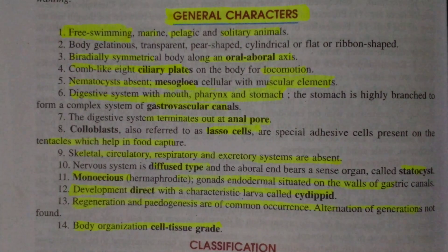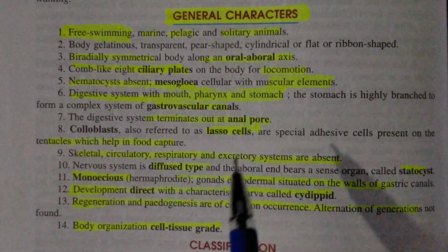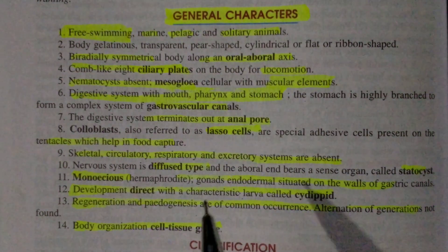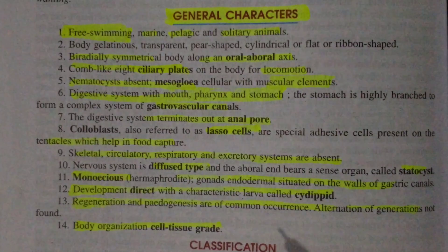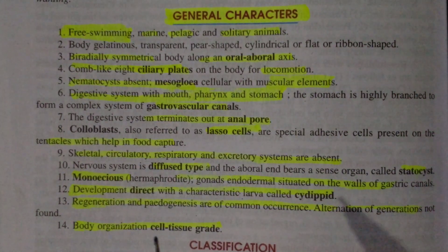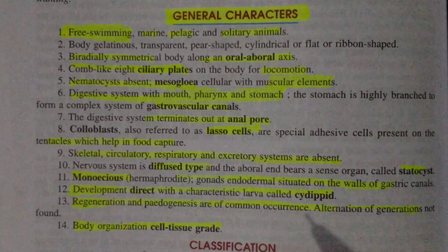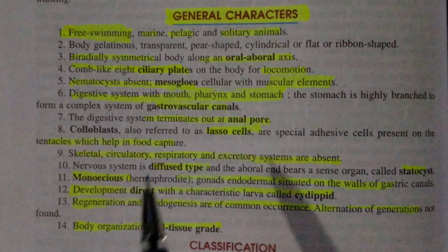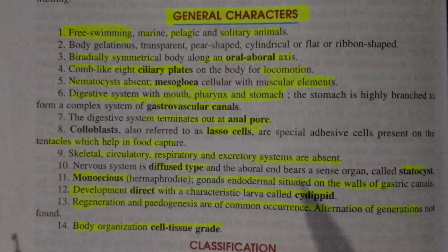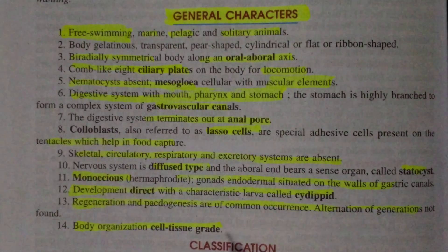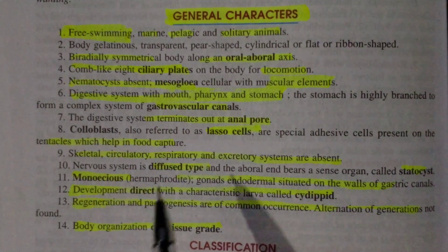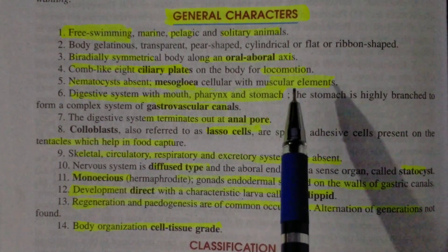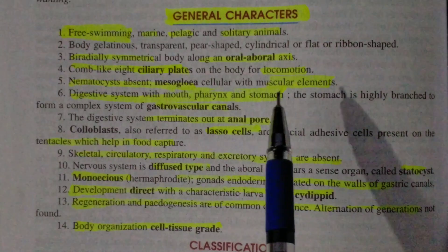The second character: body is gelatinous — made of gelatinous material (gelatinous namaak padarth se bani hoti hai). The body is transparent (paradarshi), pear-shaped (nashpati ke aakar ki), cylindrical (belaanakar), flat (chapti), or ribbon-shaped (phiti jaisi). These are the various body shapes found in Ctenophora.